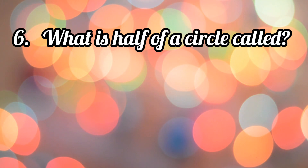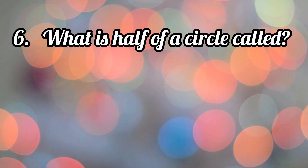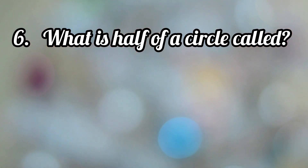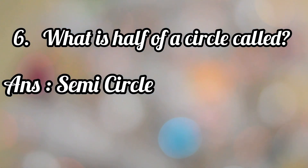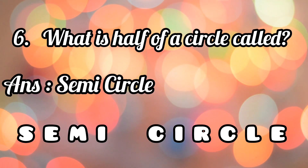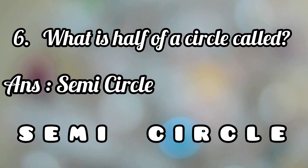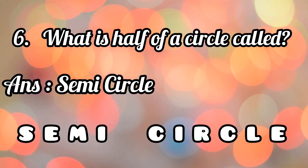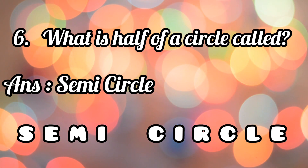What is half of a circle called? Semi-circle. S-E-M-I-C-I-R-C-L-E. A semicircle has one straight line and one curve and two corners.